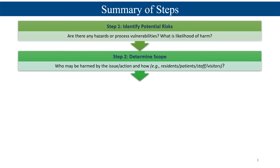The second step is to determine the scope. You want to see how broad the scope might be. Who might be harmed by this issue, action, or event, and how might they be harmed? Will it have interaction with residents, patients, staff, visitors? Is there a larger, broader scope? You want to determine how far the impact could be.